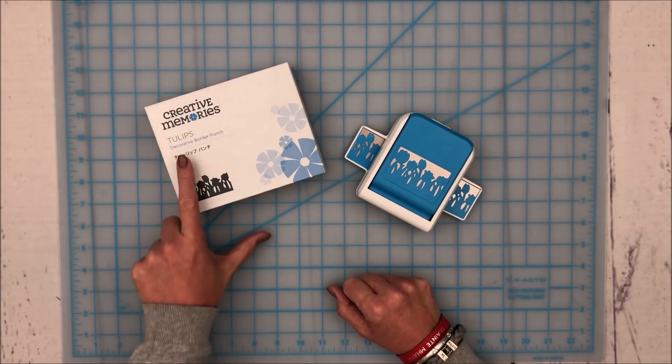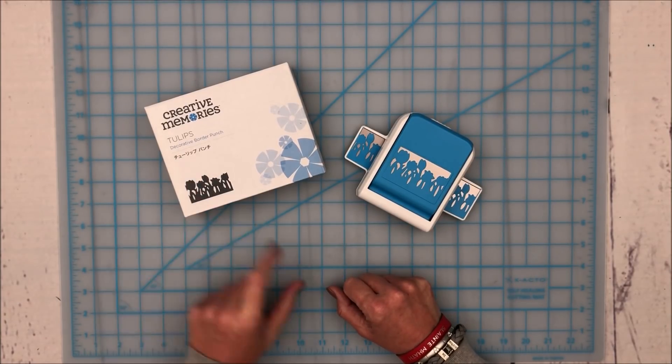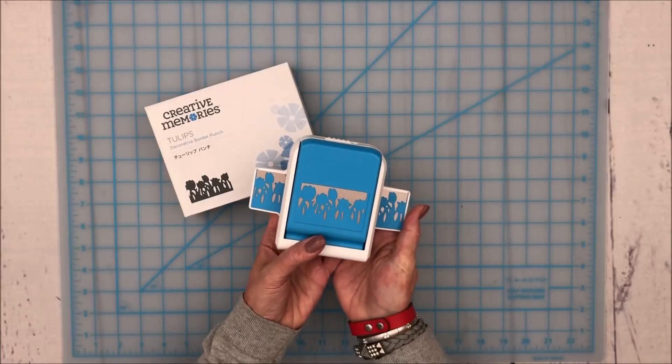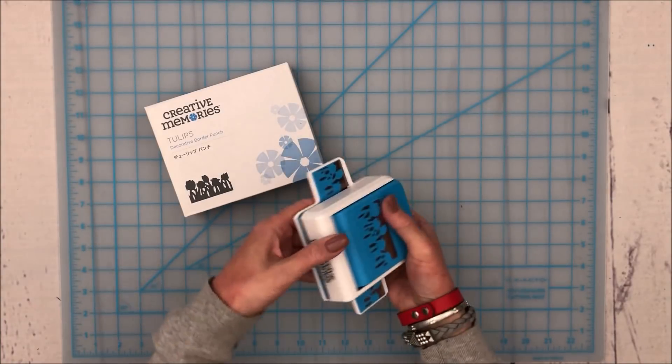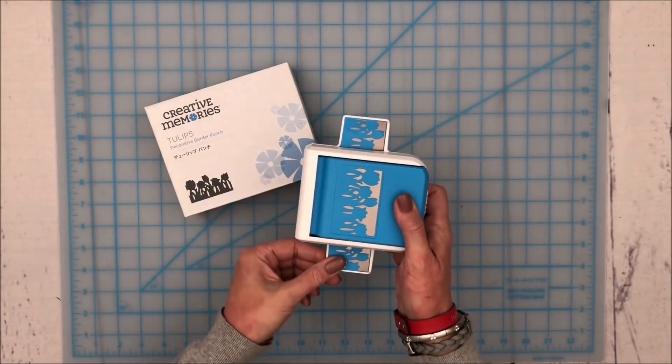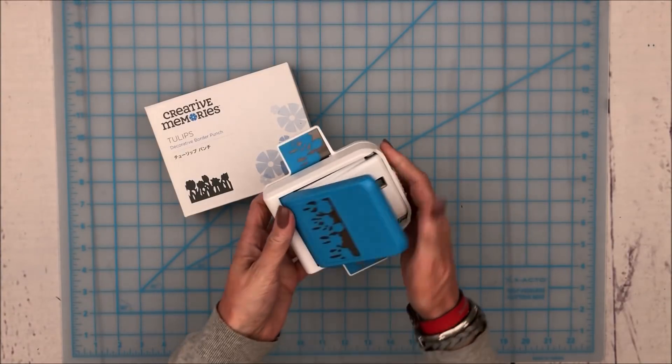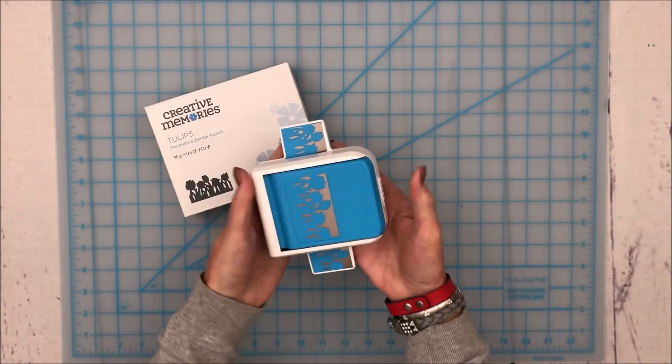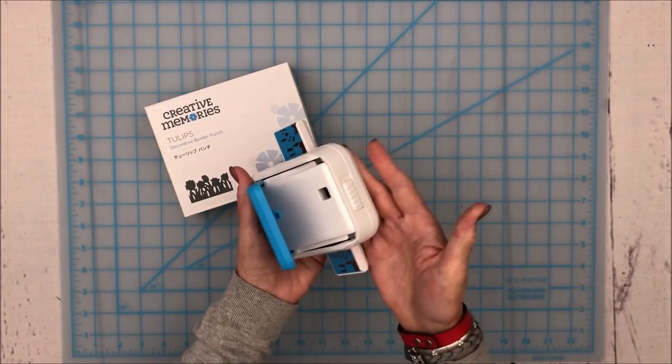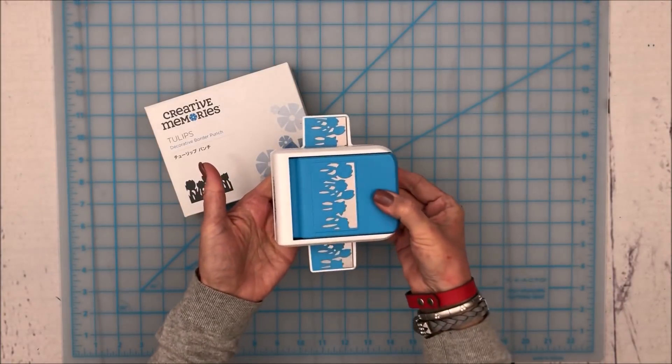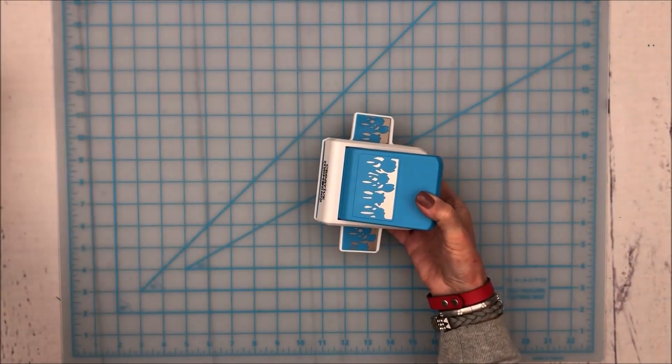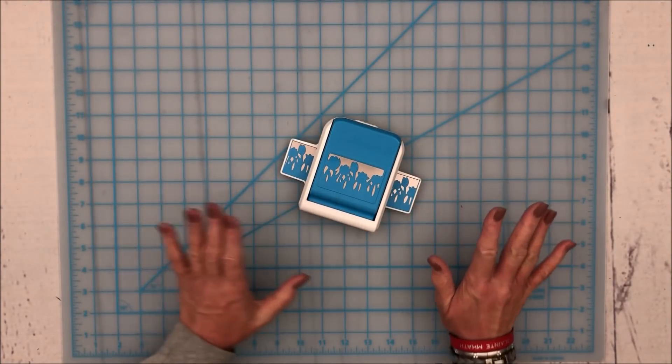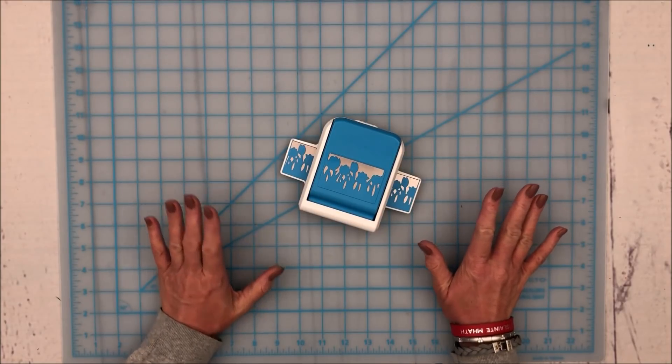In this video I'm going to show you how to use the Tulips Decorative Border Punch. Now the border punches from Creative Memories that are standalone have these little base plates on them, and just like the other punches they have the locking mechanism which allows the punch to be stored flat, not take up quite as much space. When you have it unlocked, that creates the punch mechanism or the punching motion. These punches are actually completely standalone. You don't need anything else to use them.